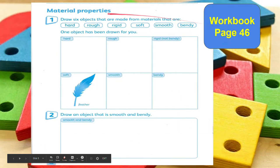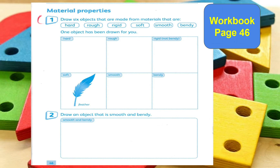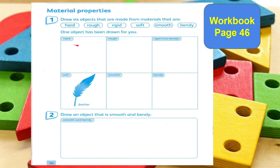Workbook page 46, Material Properties. This time you will draw six objects made from different materials that are hard, rough, rigid, soft, smooth, and bendy. The first one has been drawn for you — there is a feather under 'soft'. For number 2, you will draw an object that combines smooth and bendy materials.